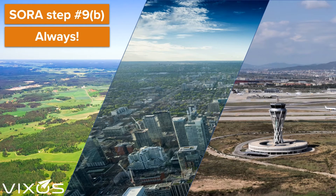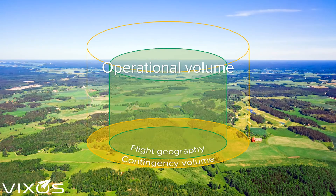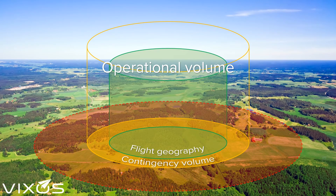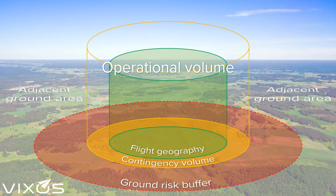For step 9 part C the setting is a bit different. Let's start by going back to the operational volume. The semantic model has one more area that we need to know about. This is a buffer on the ground and it separates the operational volume from the surrounding area. It is appropriately named the ground risk buffer. Note that unlike the air risk buffer, the ground risk buffer is not optional. Everything outside the ground risk buffer is called the adjacent ground area — this includes any area that the drone may be able to reach during a flyaway.